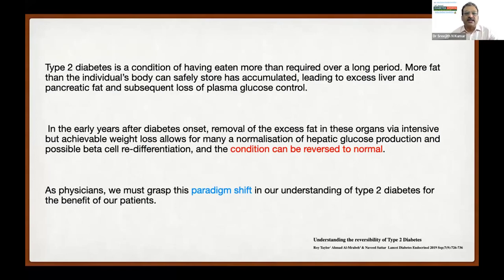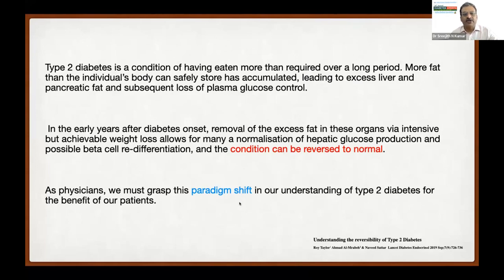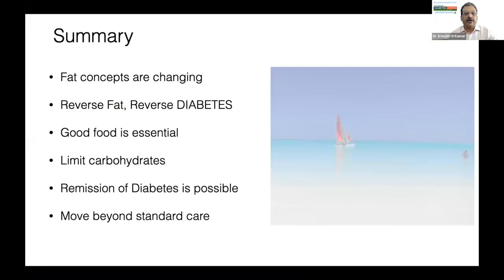Let us redefine the situation. Type 2 diabetes is a condition where more fat than the individual's body can safely store has accumulated over a long period, leading to excess liver and pancreatic fat and subsequent loss of plasma glucose control. In the early years after diabetes onset, removal of the excess fat in these organs via intensive but achievable weight loss allows for normalization of hepatic glucose production and possible beta cell redifferentiation, and the condition can be reversed to normal.